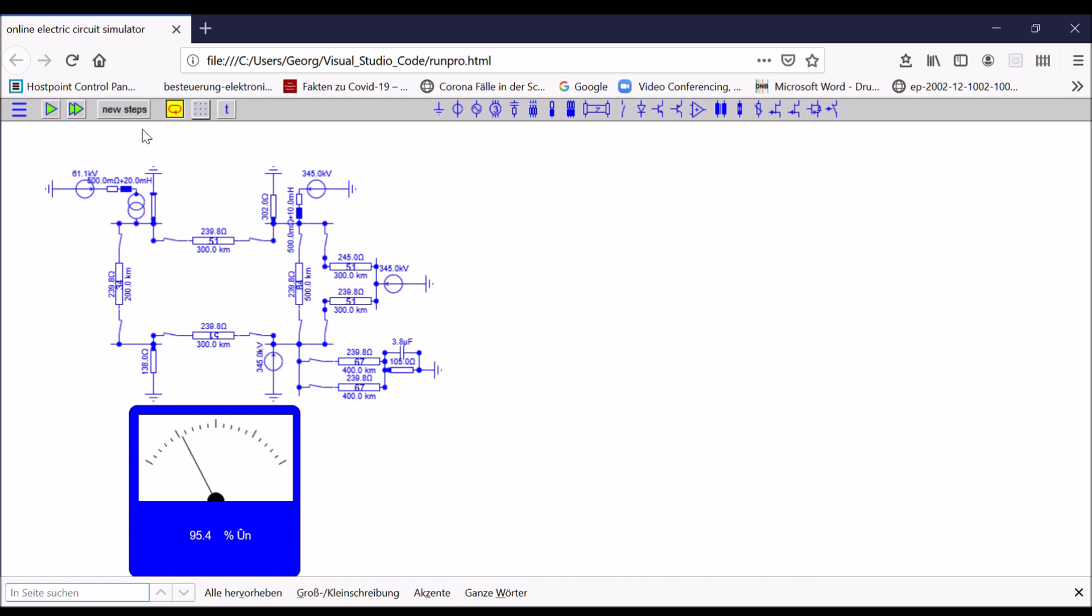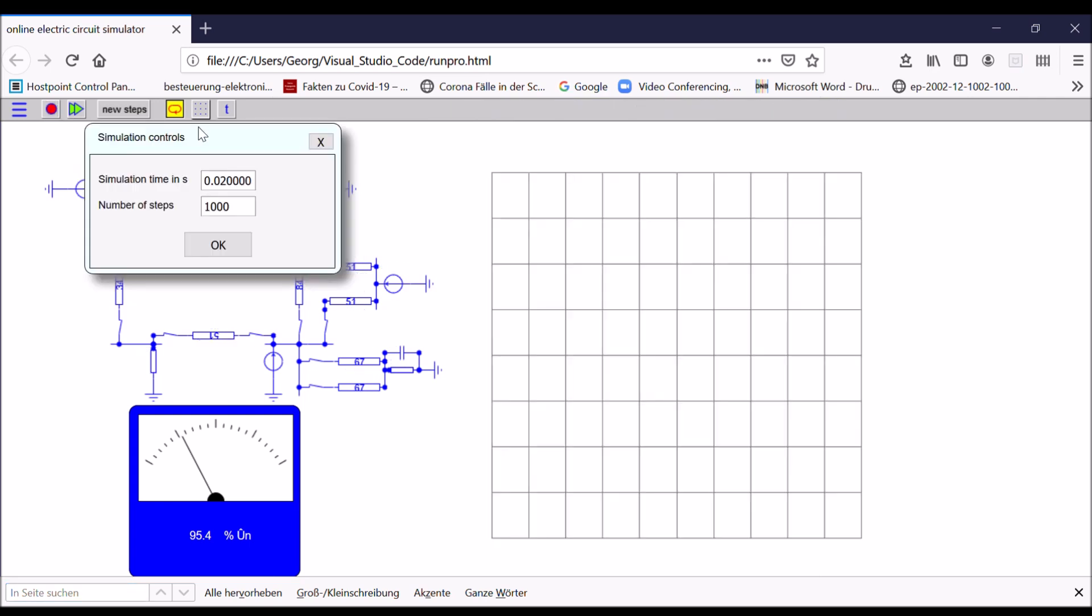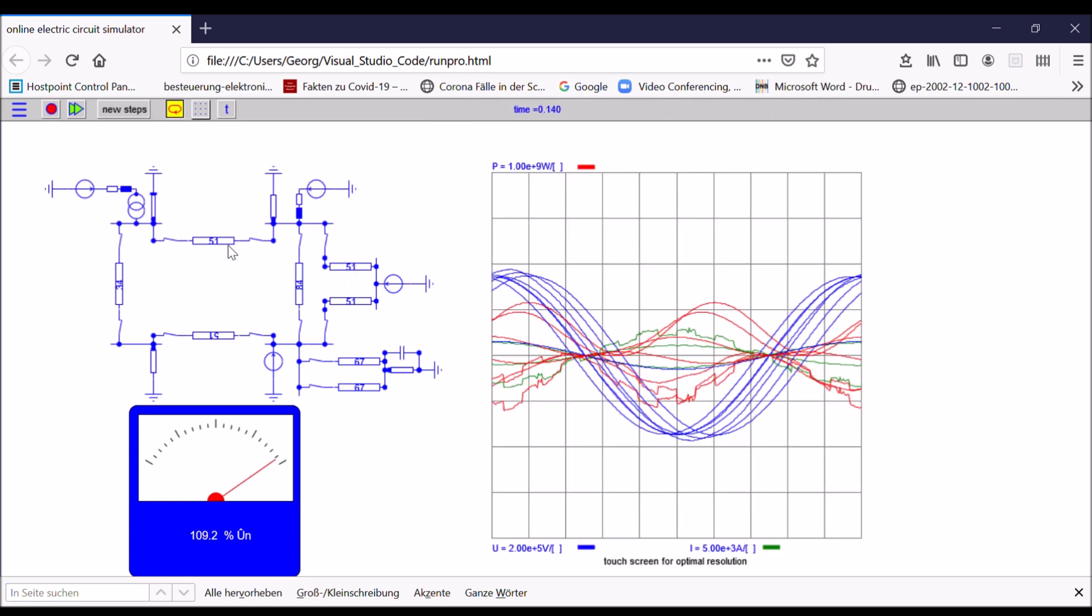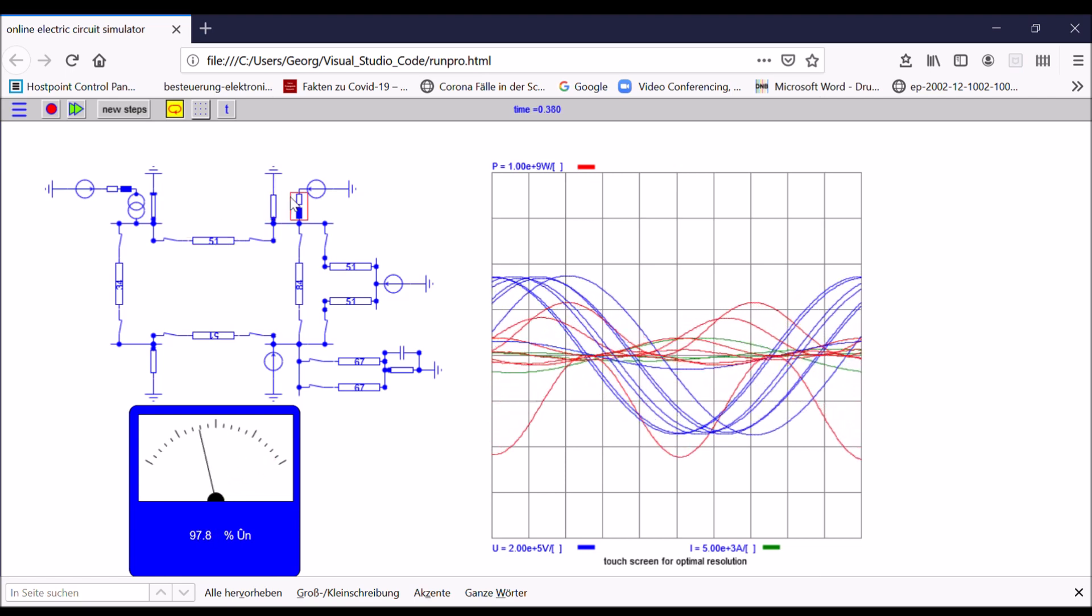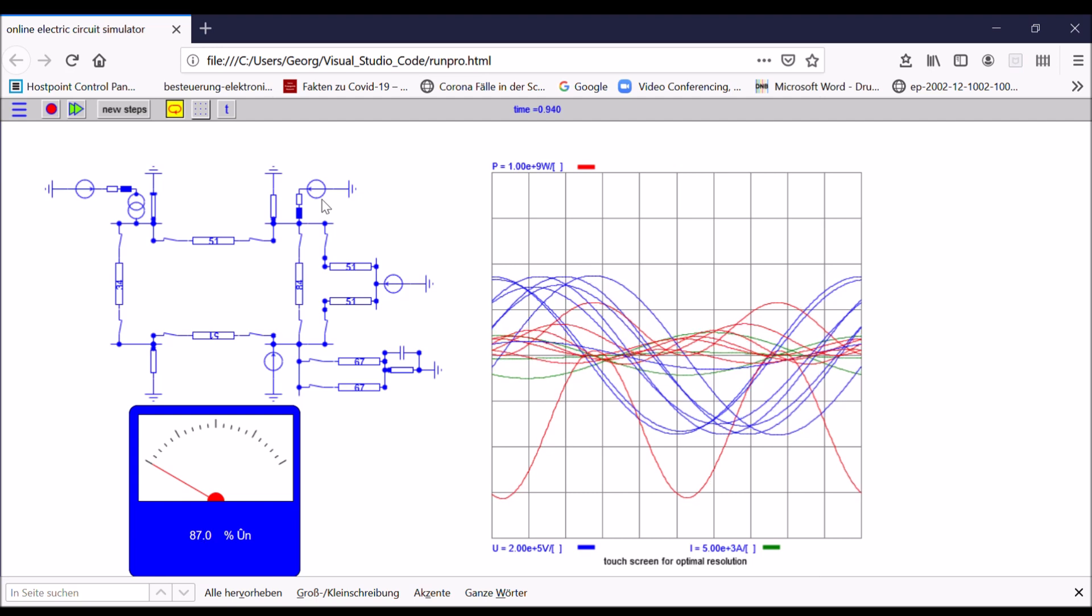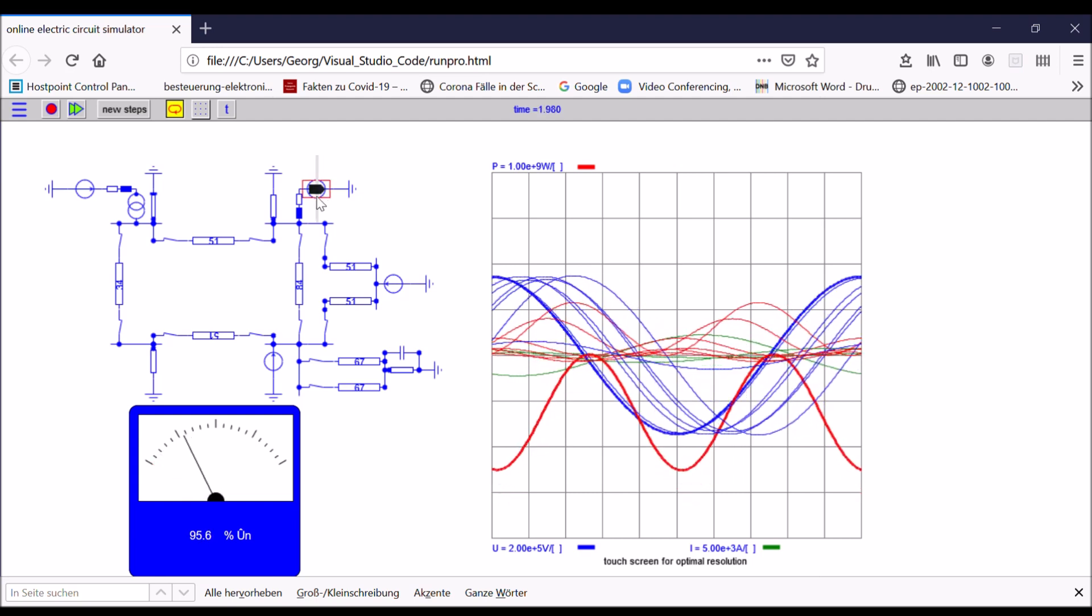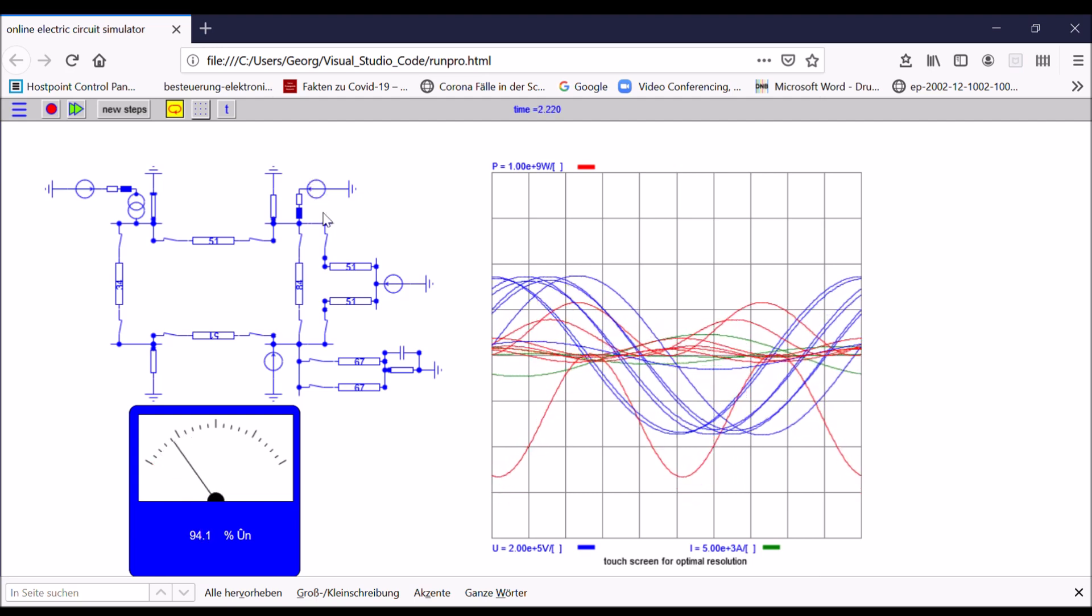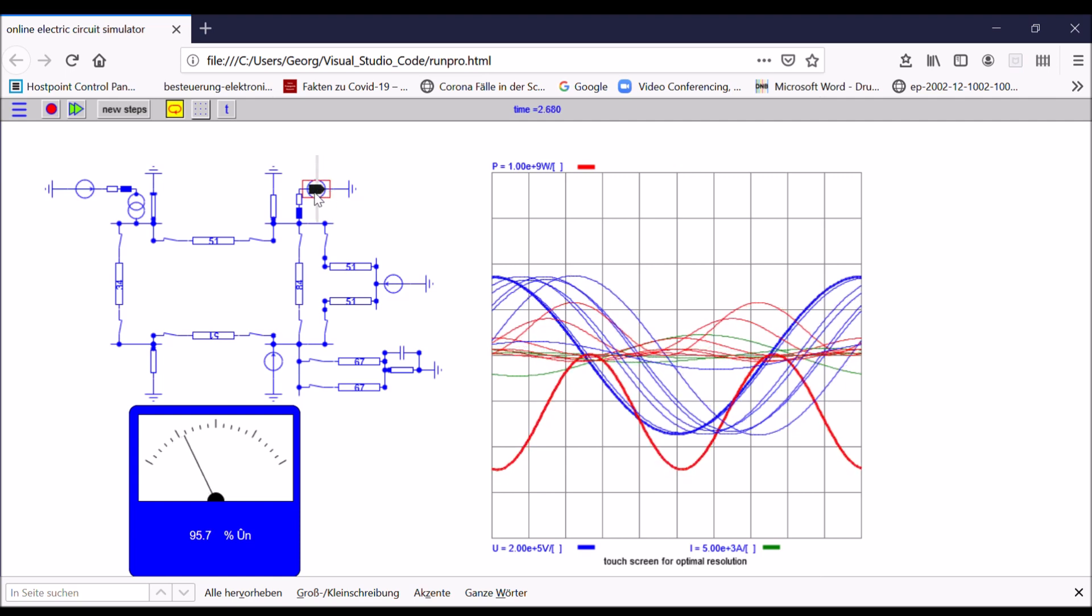You can control the reactive power delivered by a station. Let's run this simulation now for a while. Let's quickly see what happens. So we have to wait until this whole thing is balanced. So what you can see now is that most of the power is coming only from one station. This is this infinite bus here.